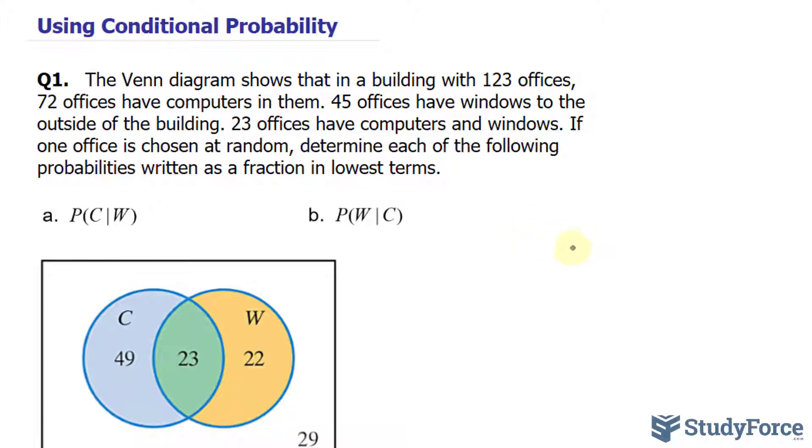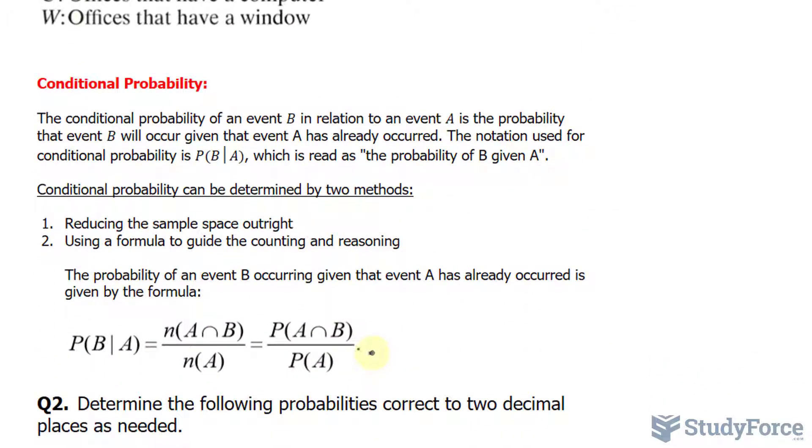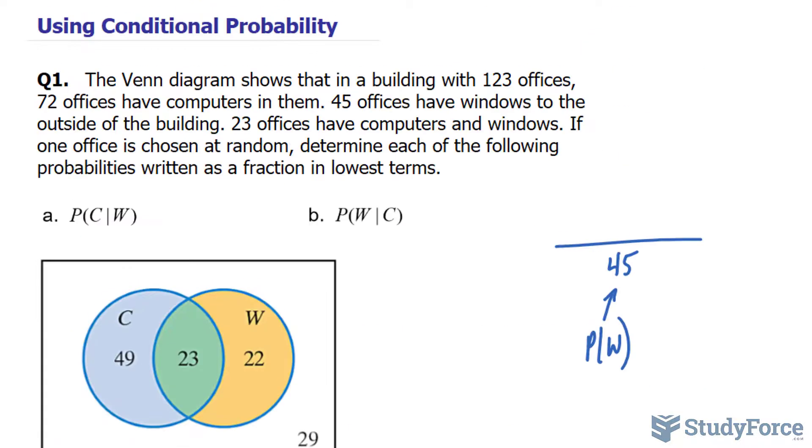So we would have a denominator of 45, the probability of selecting an office with windows. The intersection of A and B, remember this formula, is like saying how many offices have windows and computers.